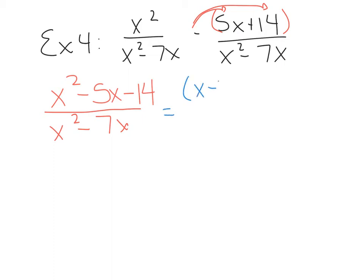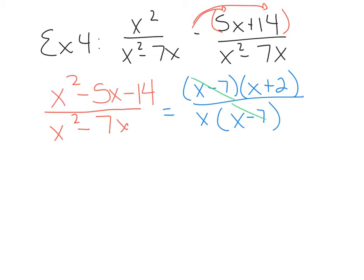If you do not distribute this to every term behind it, you will end up with a wrong sign, which makes it difficult to factor. The factors of x squared minus 5x minus 14 are x minus 7 and x plus 2. On the bottom, I factor x times x minus 7, factoring out the GCF, and the x minus 7 cancels. So I have x plus 2 over x. Please resist the urge to cancel these x's — this x is a term, and terms do not cancel. This is your final answer.